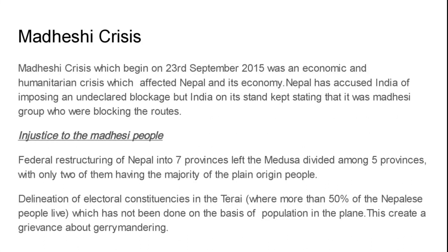The Madhesi Crisis, which began on 23rd September 2015, was an economic and humanitarian crisis which affected Nepal and its economy. Nepal accused India of imposing an undeclared blockade, but India on its part kept stating that it was the Madhesi Group who were blocking the routes. Since almost 50% of Nepal's total trade is done with India, when there was a blockade on the routes through which goods are exchanged, there was a major economic crisis. So who are the Madhesi Group and why were they blocking the routes?